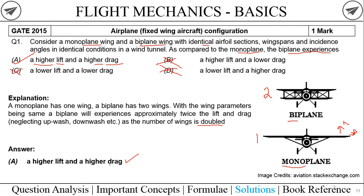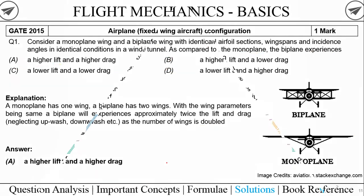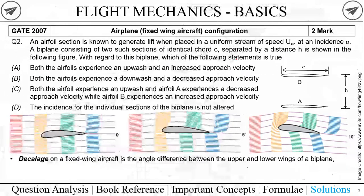Checking the answer key — yes, option A is confirmed: the biplane experiences higher lift and higher drag compared to a monoplane. Now here is the two-mark question from GATE 2007. Reading it out: 'An airfoil section is known to generate lift when placed in a uniform stream of speed U-infinity at an incidence alpha.'